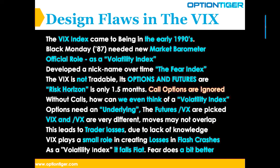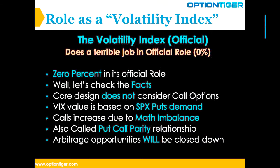Without calls, how can we think of this as a volatility index? The futures also have limitations being only three months ahead, and they behave very differently from the VIX — they're not actually correlated. The VIX values are based on SPX puts demand only, though calls do increase due to the put-call parity relationship. Because of put-call parity, call options increase in value when the stock is going down on a relative basis, which gives rise to arbitrage opportunities — but these get closed down almost immediately.